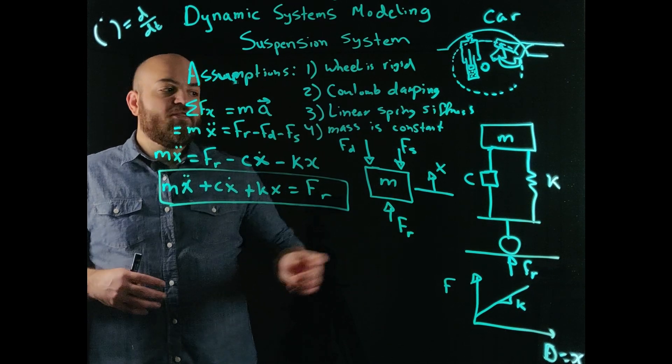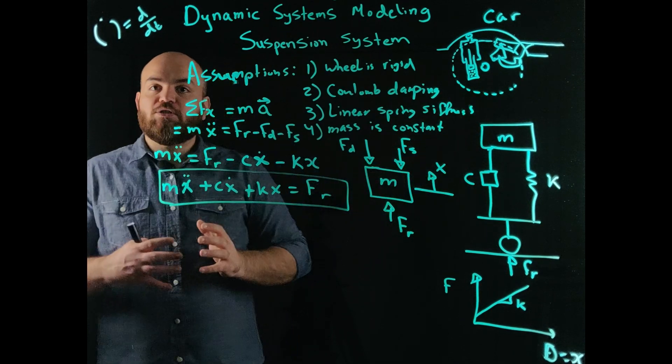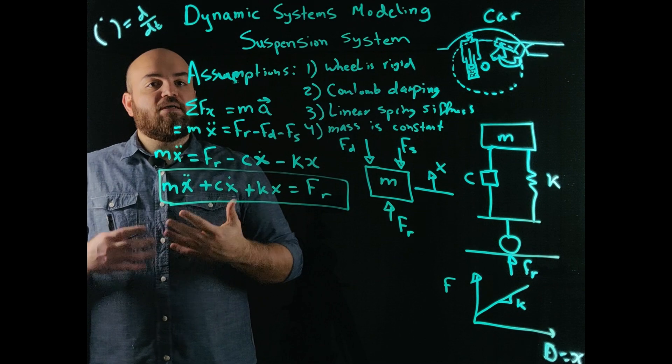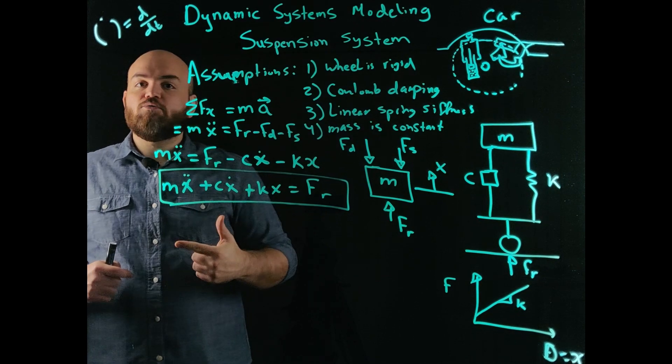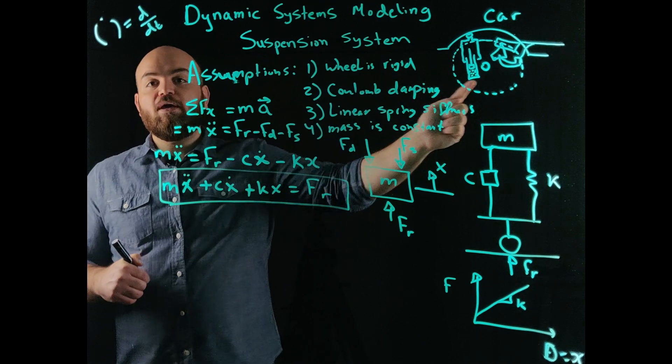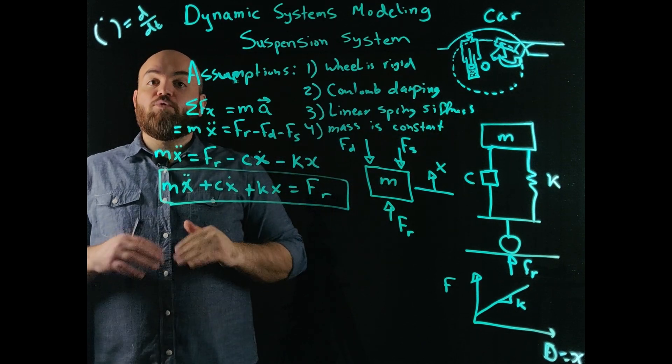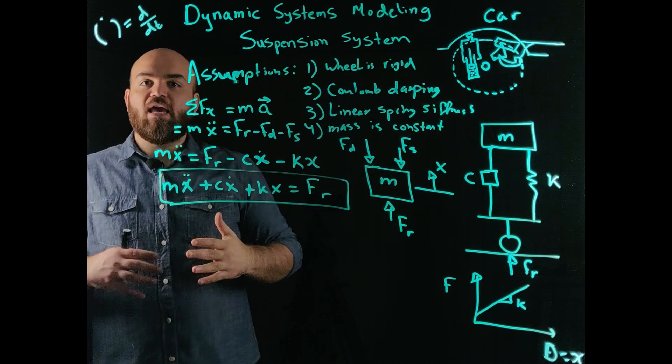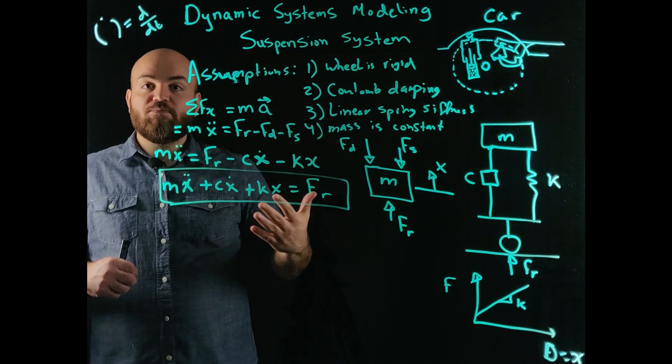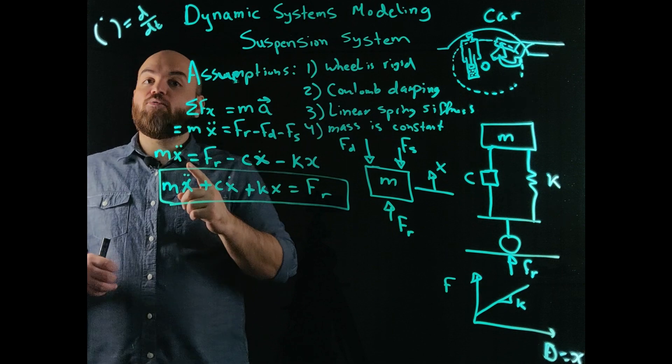Now we made the assumption here that the wheel is rigid. This may not be a realistic assumption for some systems. So I challenge you to go do this as homework. Go and assume that this wheel is no longer rigid, that it has some sort of stiffness, k wheel, and derive the equation of motion for this mass again.